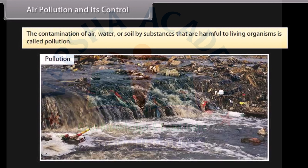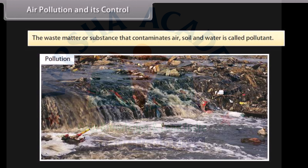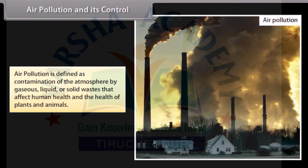The contamination of air, water or soil by substances that are harmful to living organisms is called pollution. The waste matter or substance that contaminates air, soil and water is called a pollutant. Air pollution is defined as contamination of the atmosphere by gaseous, liquid or solid waste that affects human health and the health of plants and animals.